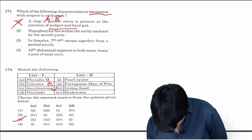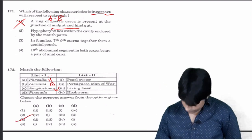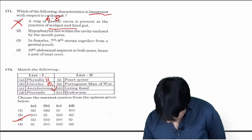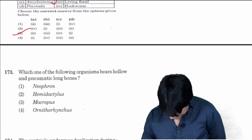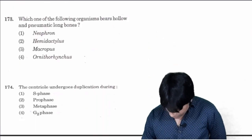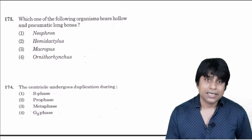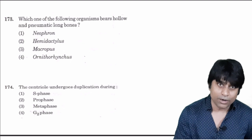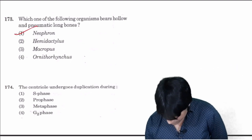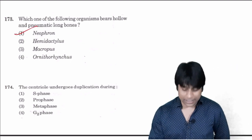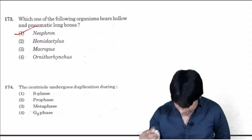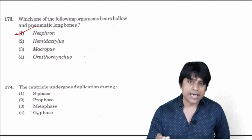Which of the following organisms have hollow and pneumatic long bones? This is a character of all modern flying birds. Find out among these: Neophron vulture is the correct answer. Hemidactylus is lizard and Macropus is kangaroo, Ornithorhynchus is mammal. Those three options you can omit.